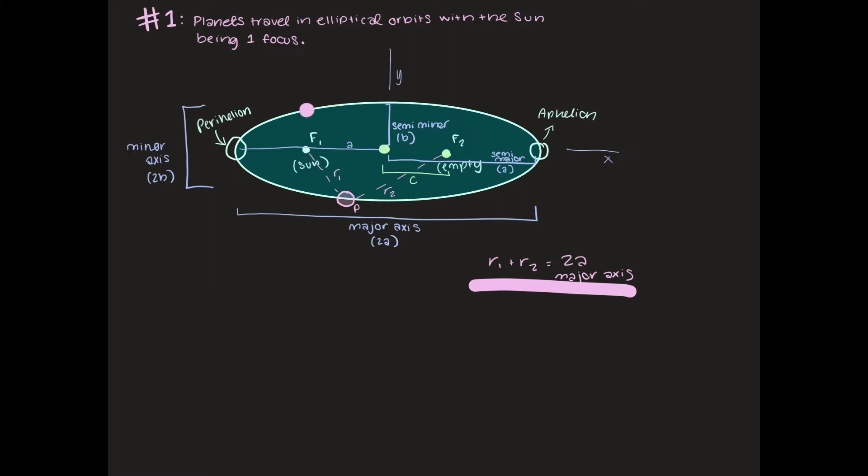The crazy thing about this property is that that relationship exists no matter where the satellite is in the orbit. If the satellite is here the same relationship occurs here, here, here, so it really doesn't matter where on the orbit it is, r1 plus r2 is always going to be equal to this major axis.